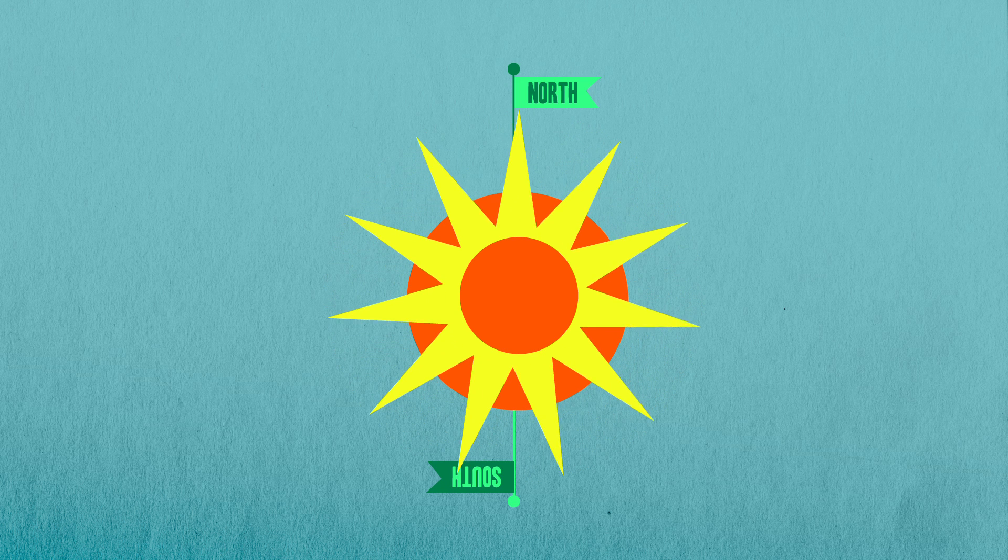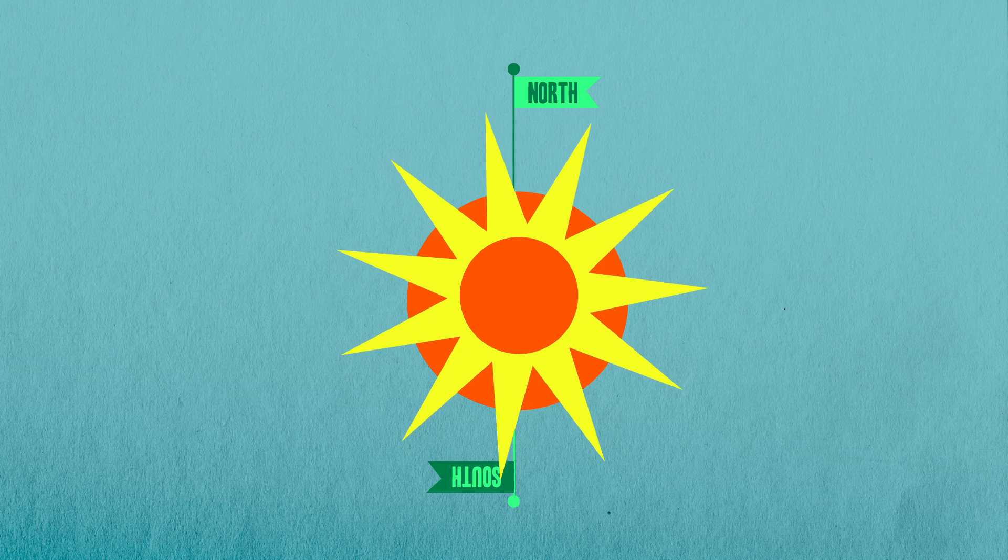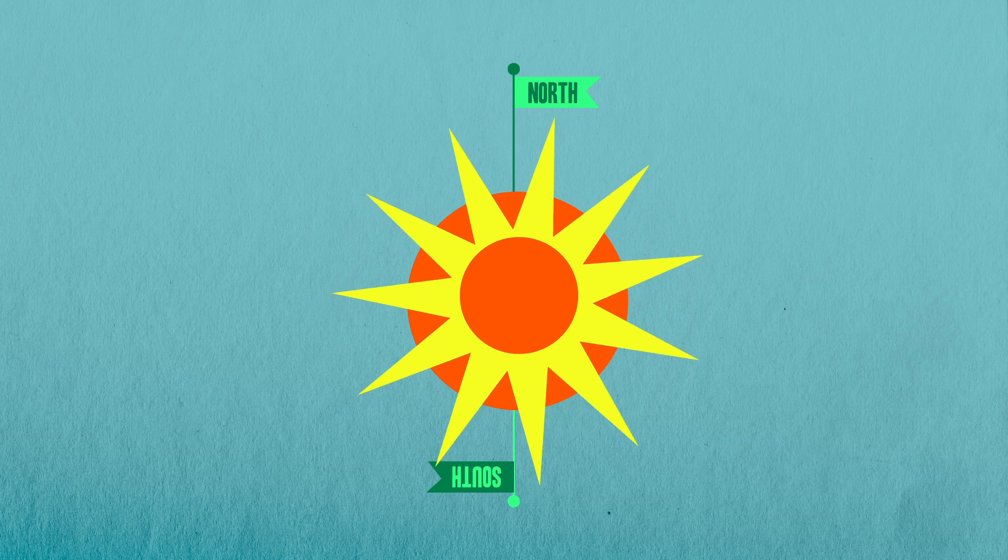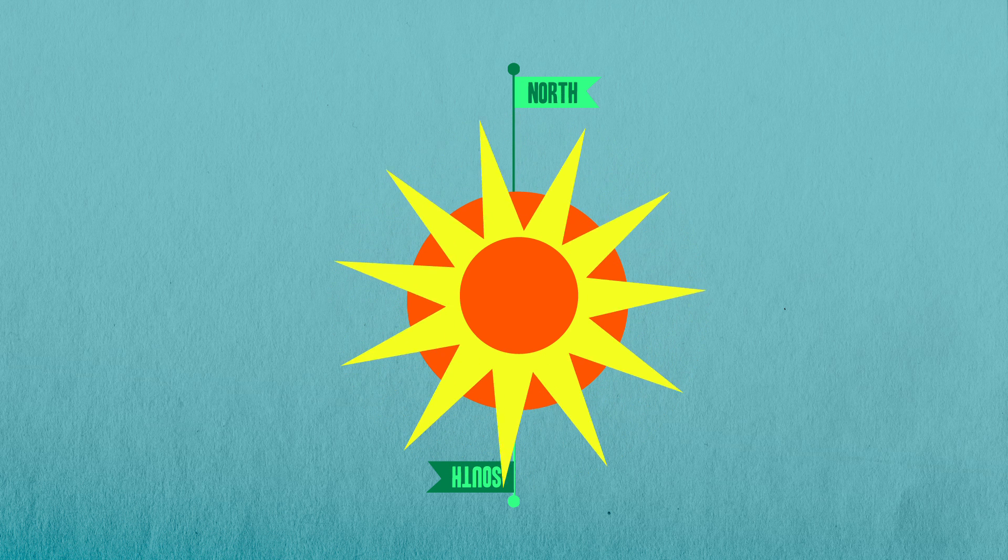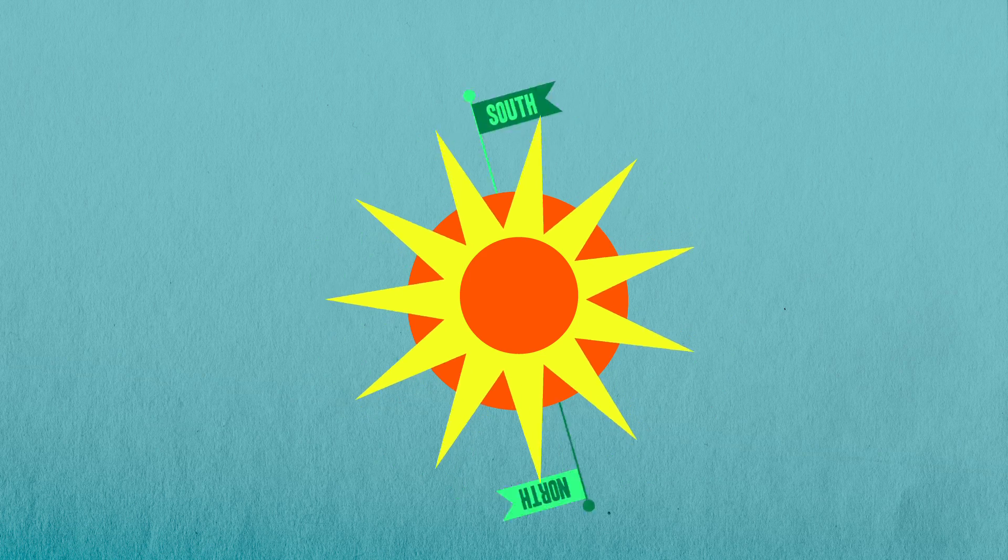As you might expect, the Sun has some pretty strong magnetic fields. And just like the Earth, it has north and south poles. But because the Sun is not, in fact, a massive incandescent gas, it is an enormous ball of juicy plasma, its magnetic fields are always churning around and stretching and contorting. And by the time they're done shifting, every 11 years or so, the poles have reversed.